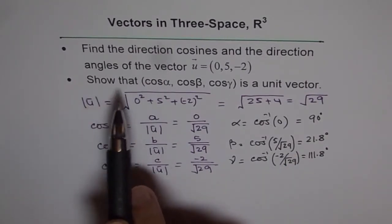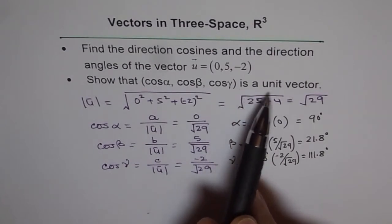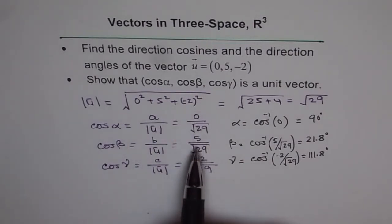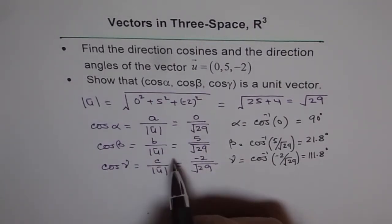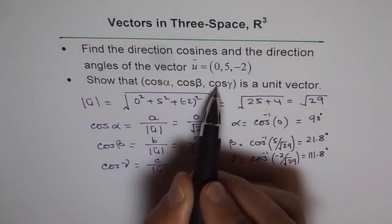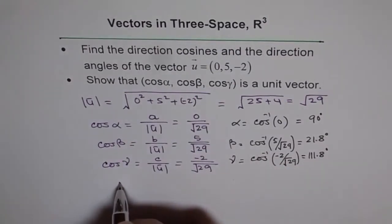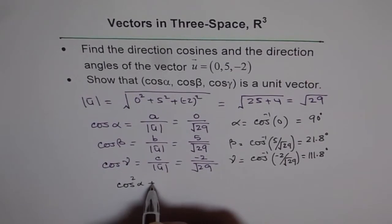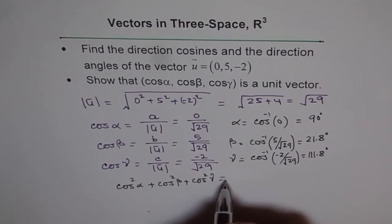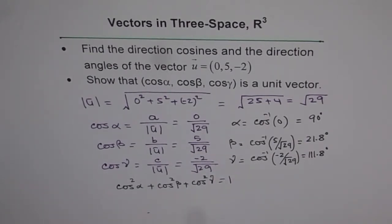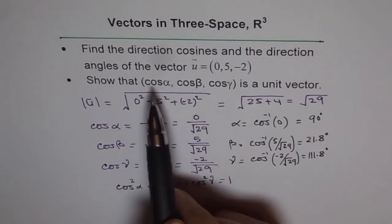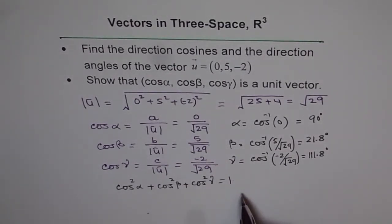The second part is to show that (cos α, cos β, cos γ) is a unit vector. For it to be a unit vector, the magnitude should be 1. So if these are my direction numbers, then cos²α + cos²β + cos²γ should equal 1. Because the magnitude formula is √(a² + b² + c²), and √1 = 1.